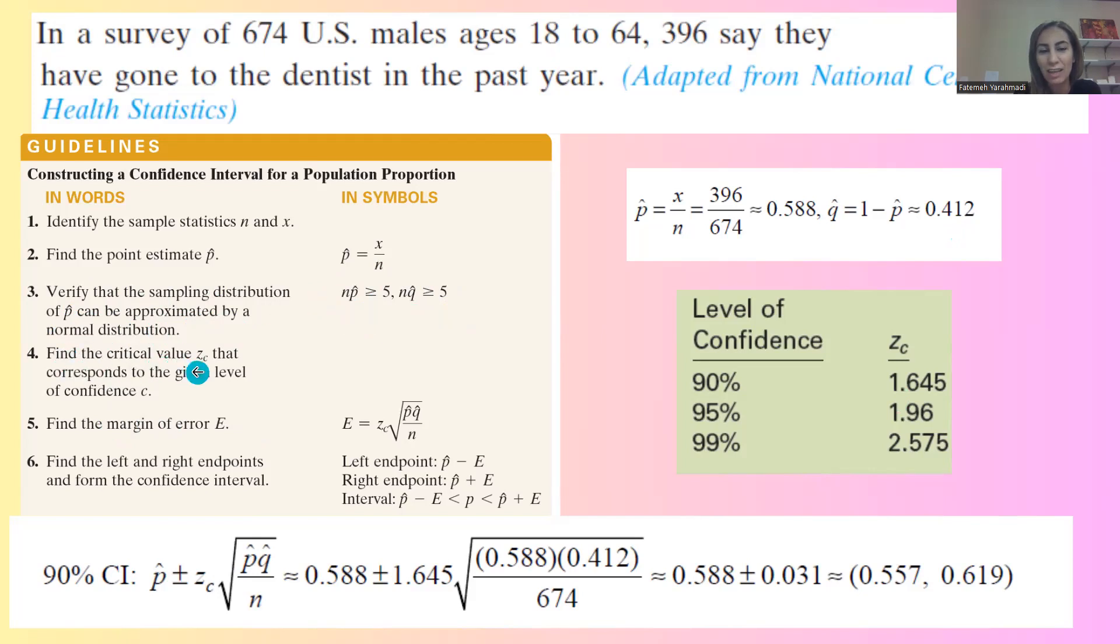Find the critical value Z sub C. Since we are finding 90% confidence interval, the Z sub C or critical value is 1.645. Why do we need that information?